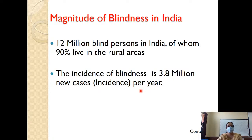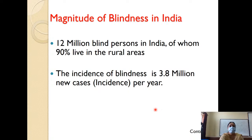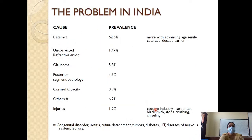Fifty percent of the world's blind are children, which is alarming because they will continue to develop into blind adults, increasing DALYs and reducing workforce productivity. In India, 12 million persons are blind, 90 percent of them live in rural areas where facilities for detection, prevention, and early cure are less. The incidence of blindness is about 3.8 million new cases per year.